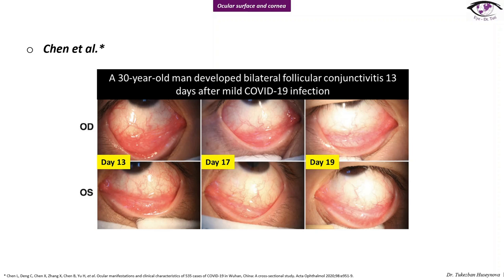Here is the picture of a patient from Chen et al. — a 30-year-old man who developed bilateral follicular conjunctivitis 13 days after mild COVID-19 infection. On day 13 we can see infection and injection of the conjunctiva, and on days 17 and 19 there is an improvement of the patient's symptoms after starting therapy with ribavirin eye drops.